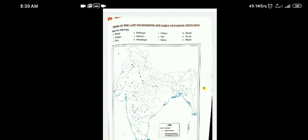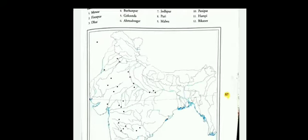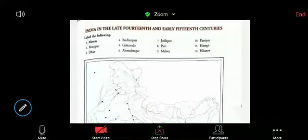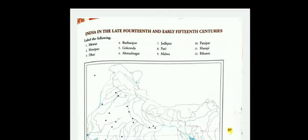We are going to discuss our map work of history. In this class we will discuss major towns and cities of the Lodhi Empire. We are having cities and towns like Mewar, Firospur, Dhar, Buranpur, Golconda, Ahmadnagar, Jodhpur, Puri, Malwa, Panipat, Hampi, and Bikanir.